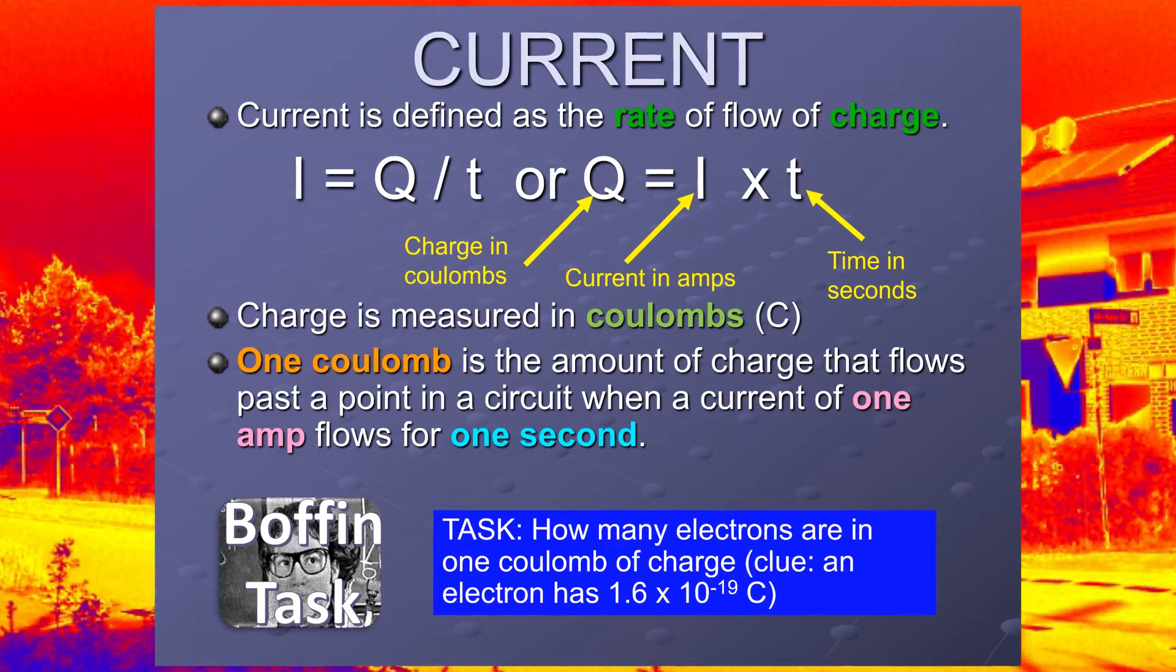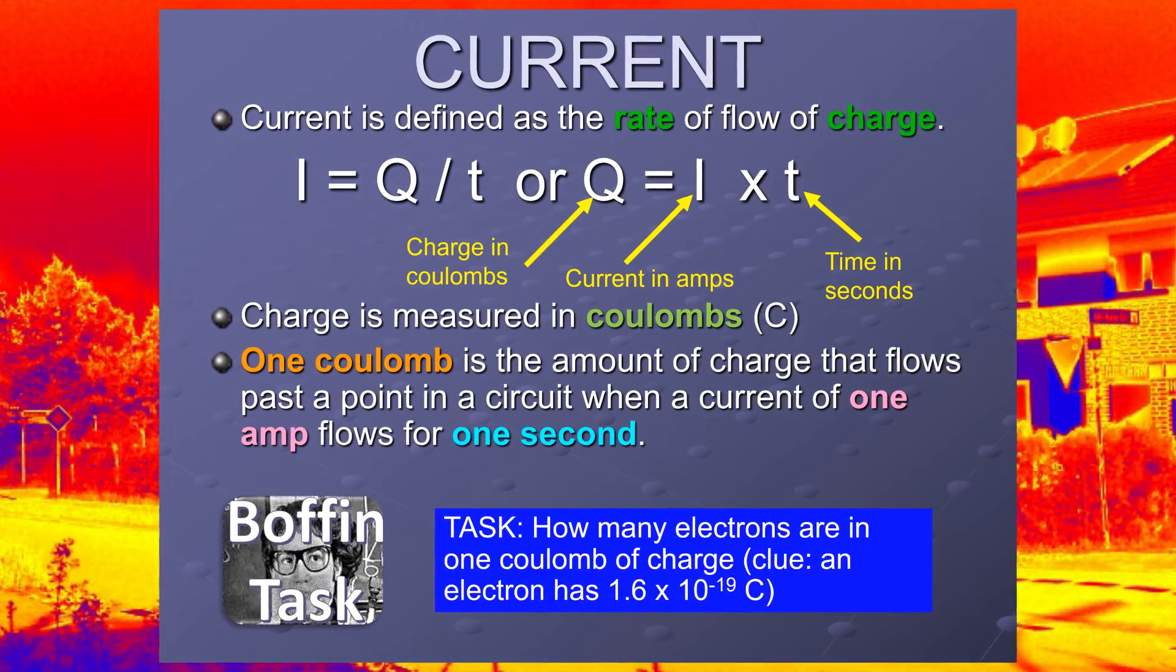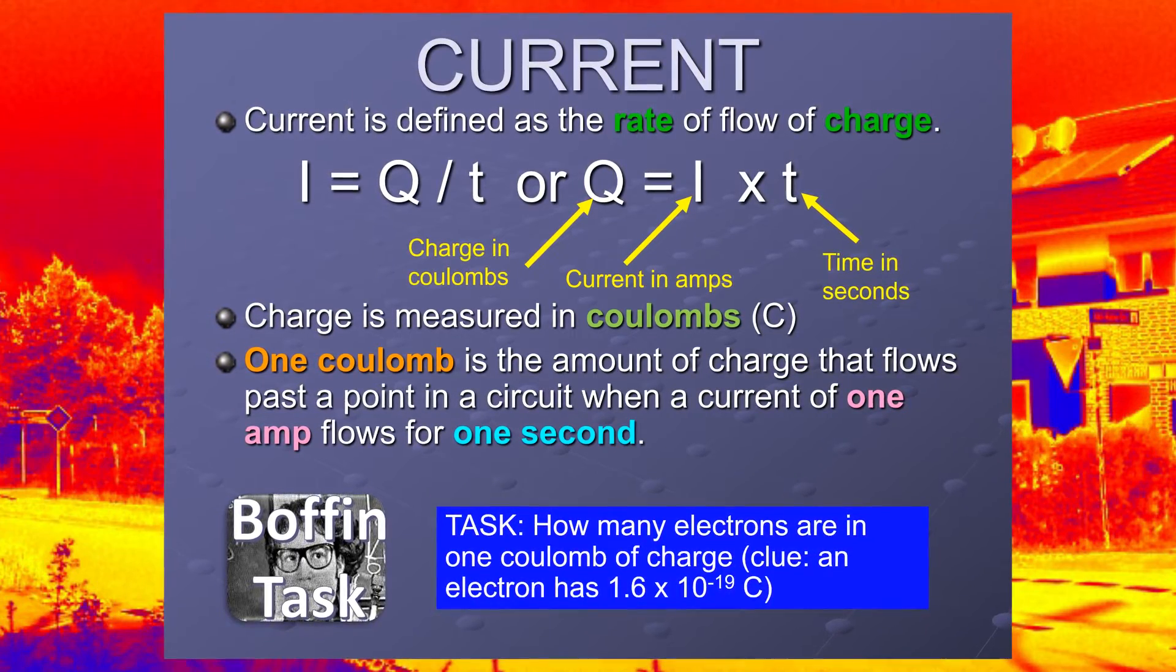So, current is defined as the rate of flow of charge. In plain English, current is how fast charge is moving around the circuit.